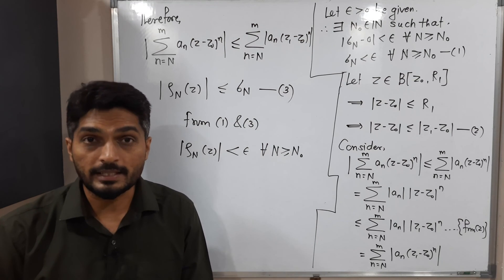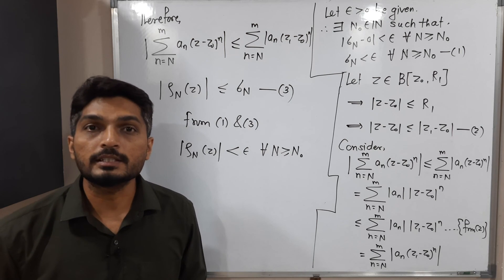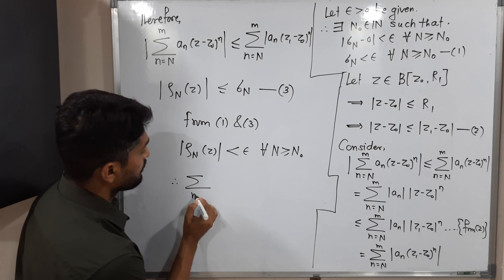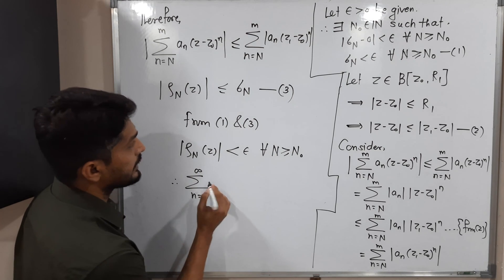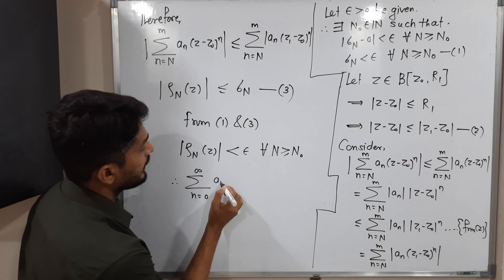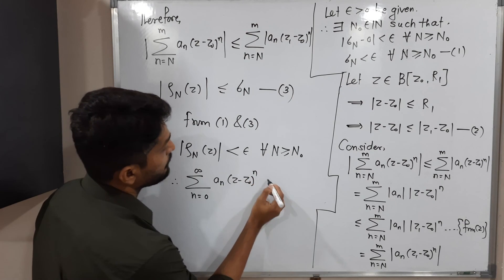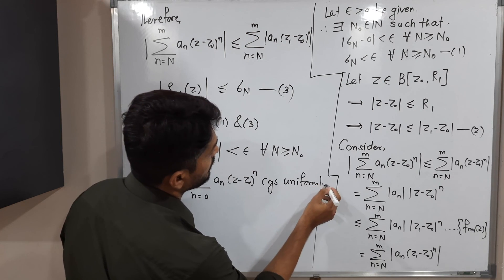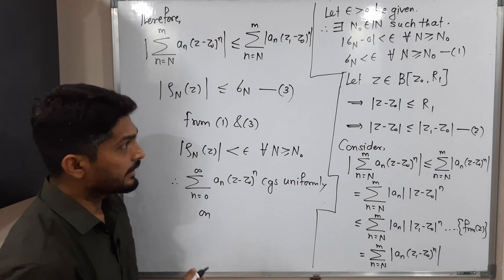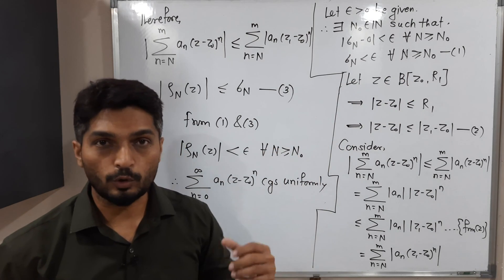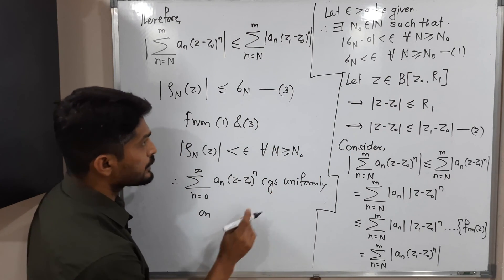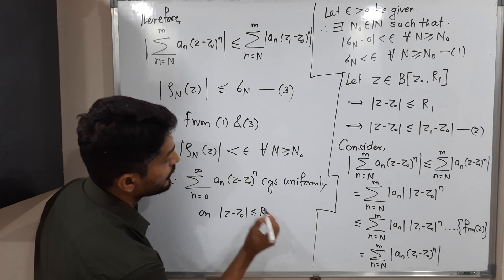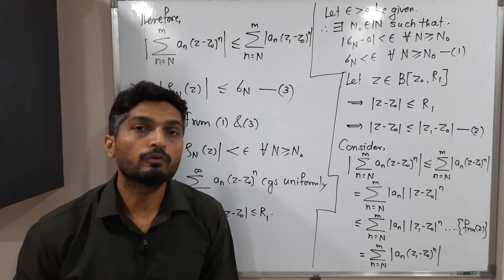Since the remainder ρₙ(z) tends to 0 for every z in the closed disk, we can say the corresponding power series converges uniformly. Therefore, Σ from n = 0 to infinity of aₙ(z - z₀)ⁿ converges uniformly on the closed disk |z - z₀| ≤ r₁. In this way, we have completed the proof of this theorem.